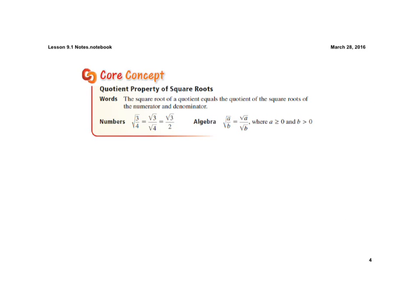Now we're going to look at the quotient property of square roots. The quotient property states that the square root of a quotient equals the quotient of square roots. Looking at the first example with numbers, the square root of three-fourths can be rewritten as the square root of three all over the square root of four, which equals the square root of three all over the whole number two.